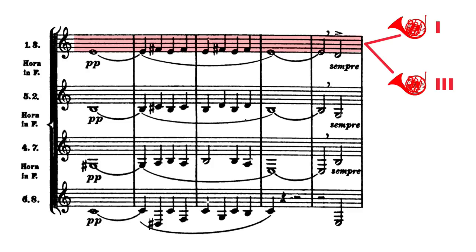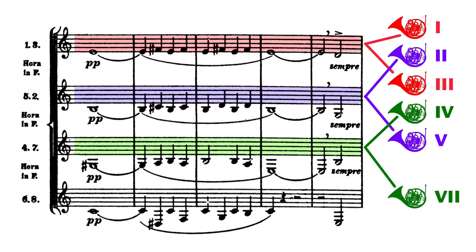One and two on top, three and five middle high, four and seven middle low, and six and eight on the bottom. The effect of this strategy is to interlock the chords across the entire section, rather than letting the bottom four horns get disconnected from the top four.